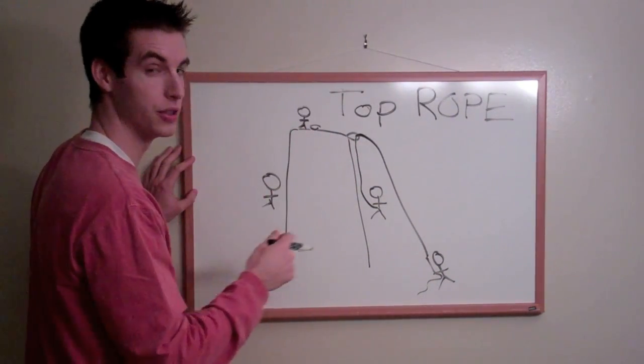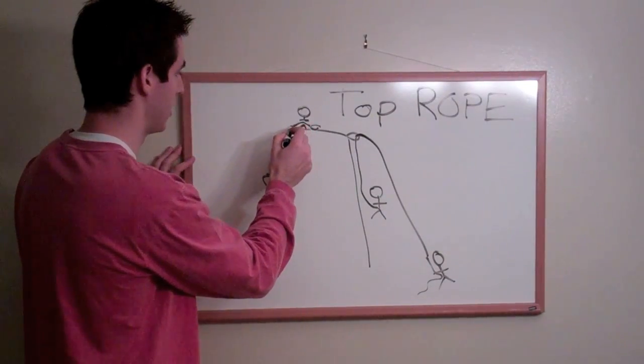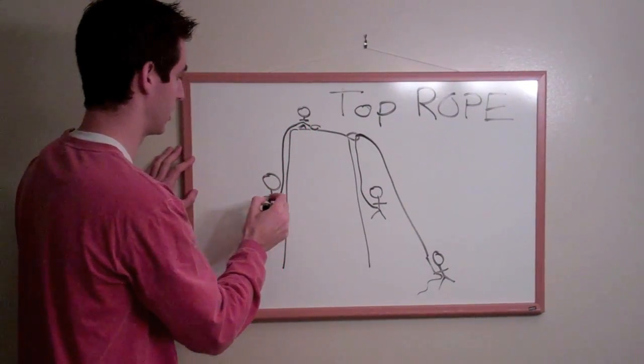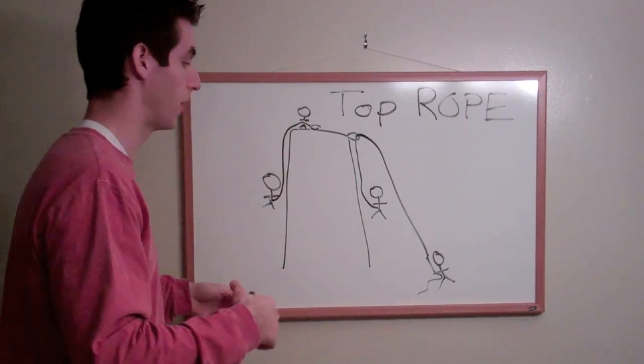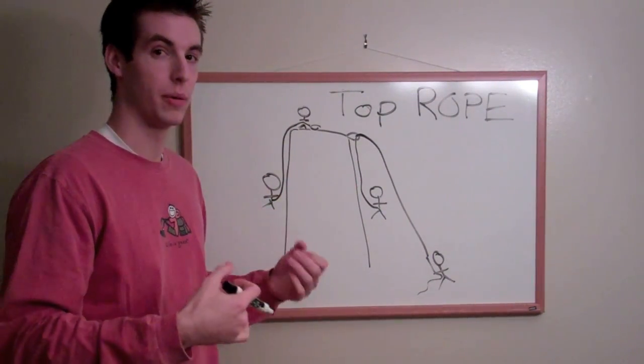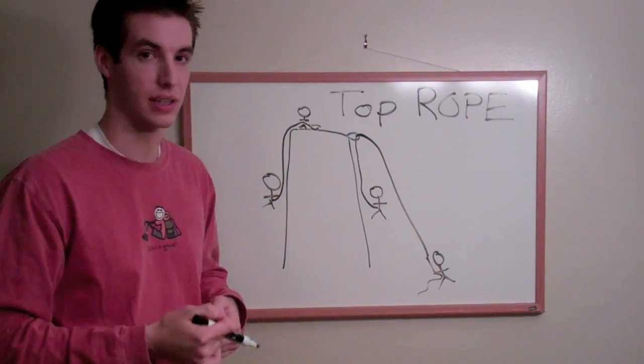This time, the rope would just go down to the climber. So the belayer would be on top of the cliff instead of on the bottom. Obviously, in top roping, you have to be able to have access to the top of the cliff.